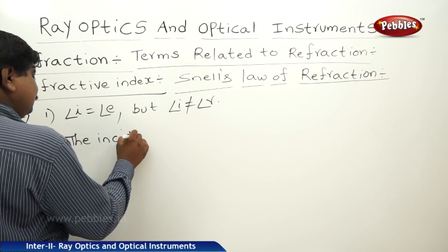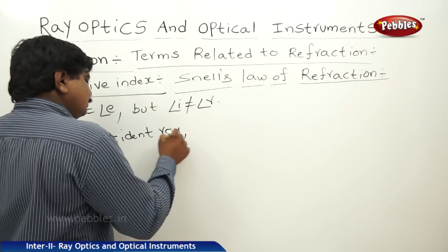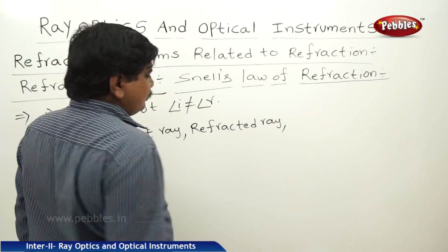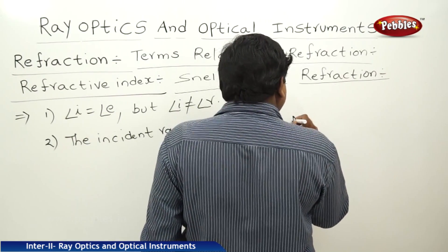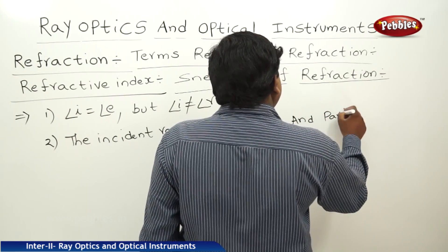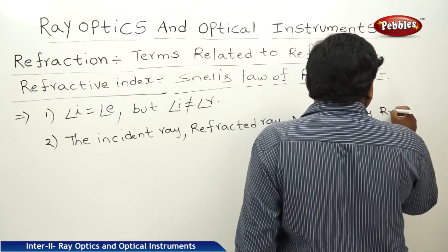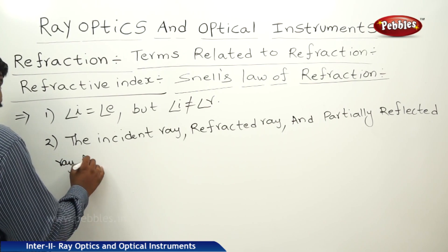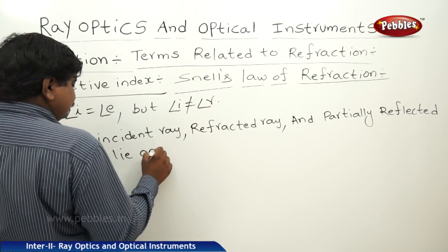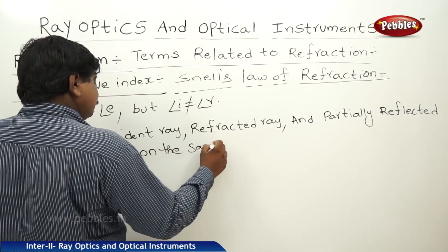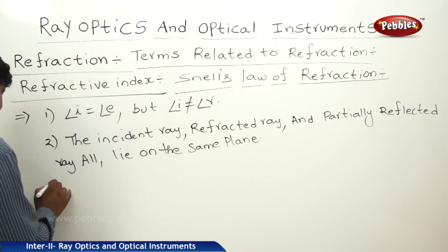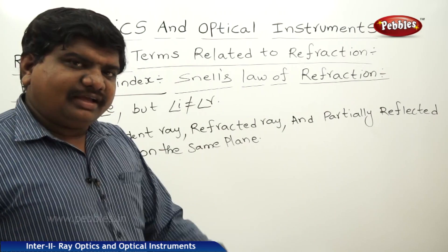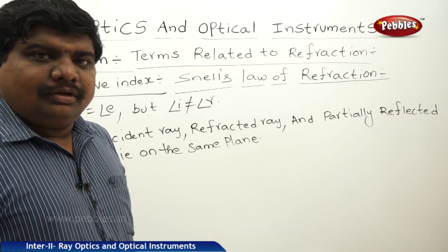The second law states that the incident ray, refracted ray, and partially reflected ray all lie on the same plane. The third law states that the ratio of the sine of the angle of incidence to the sine of the angle of refraction is called the refractive index.